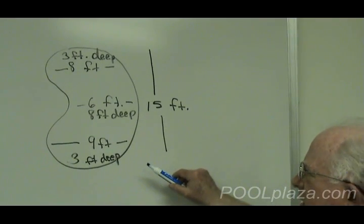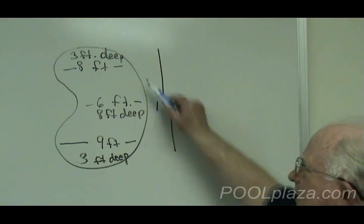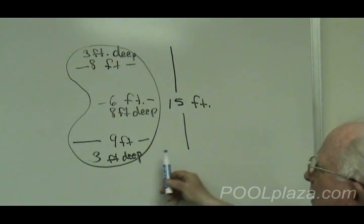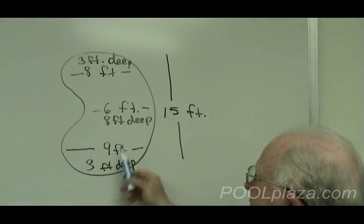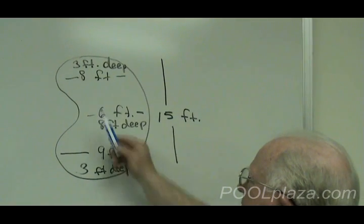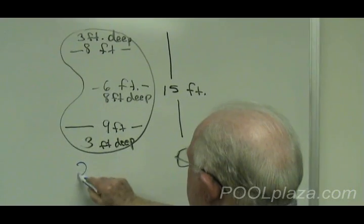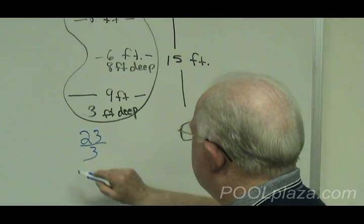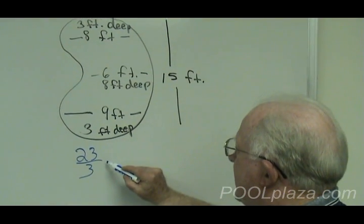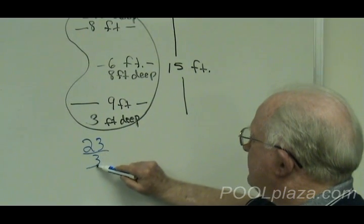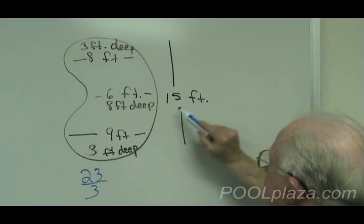Many pools are either irregular shape or what is called freeform in shape. This is a kidney-shaped pool. In this case, we take 3 widths, 9 feet at the bottom, 8 feet at the top, 6 feet in the middle, and add those together, and then divide them by 3. Once we've done that, we multiply the number we get here by the length of the pool, which is 15 feet.